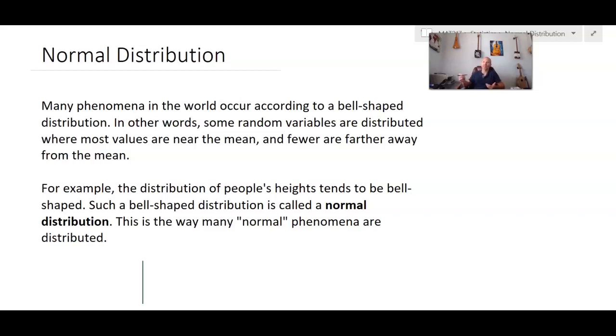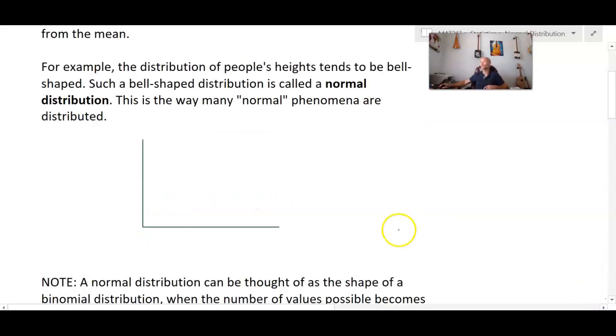Or sometimes called a Gaussian distribution for Frederick Gauss, the mathematician and statistician. For example, the distribution of people's heights tends to be bell-shaped. You might have heard that phrase, you might have heard a bell curve before. Such a bell-shaped distribution is called a normal distribution. This is the way many normal phenomena are distributed.